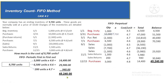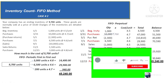As you can see, the results for FIFO Periodic and FIFO Perpetual are the same: 45,240. And yes, this is always the case — so if asked for the inventory end under FIFO Perpetual, you can solve it faster using FIFO Periodic. There are other methods to compute the merchandise inventory end, and those will be the topic for the next video.